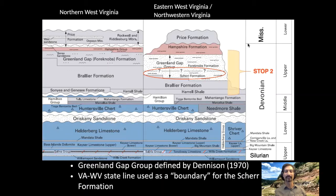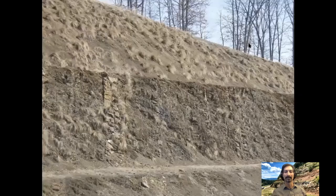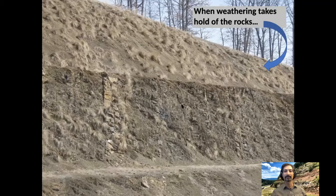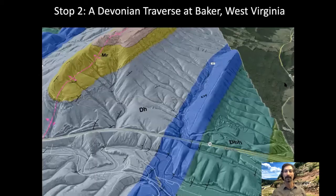This is something I want to talk about when we look at the rocks here through the section exposed at Stop 2 — it's a really great place to see it, as the entire section is exposed and almost completely undeformed. The other part of the problem when defining the Shear Formation is what happens when weathering takes hold of the rocks. This is a fairly fresh outcrop along Corridor H down here, but up here where it has weathered away on an upper bench, it's almost hard to recognize the subtle sandstones that are key in the definition of the Shear Formation.